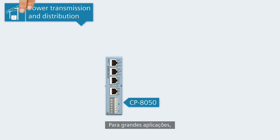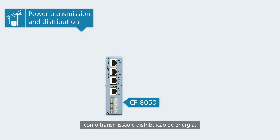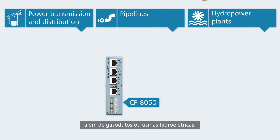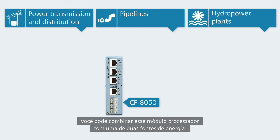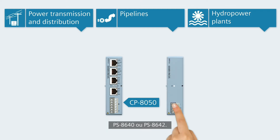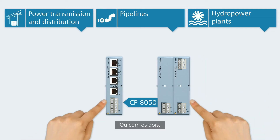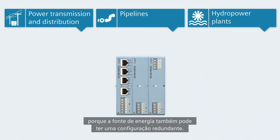For large applications such as power transmission and distribution, but also for pipelines or hydropower plants, you can combine this processor module with one of the two power supplies PS8640 or PS8642, or with both, because the power supply can also have a redundant configuration.